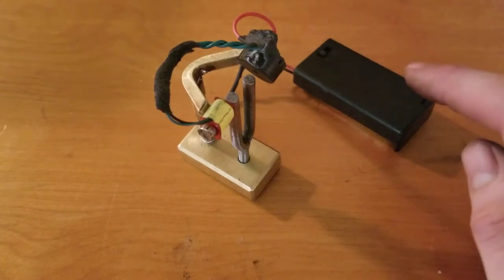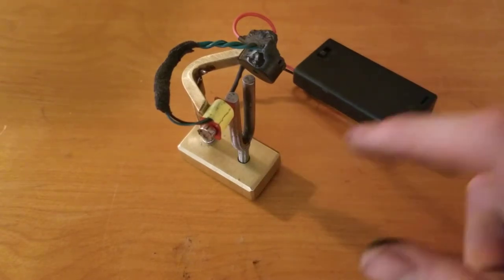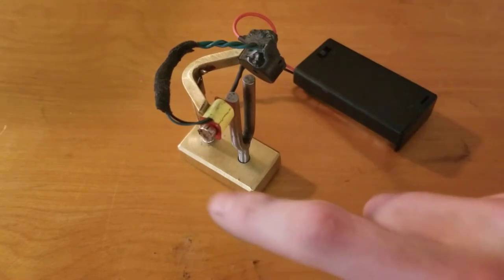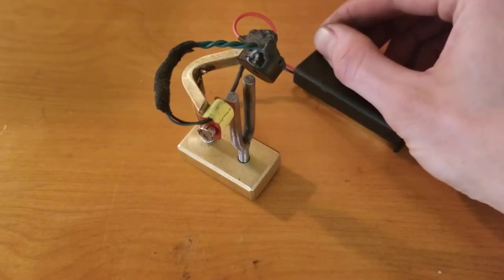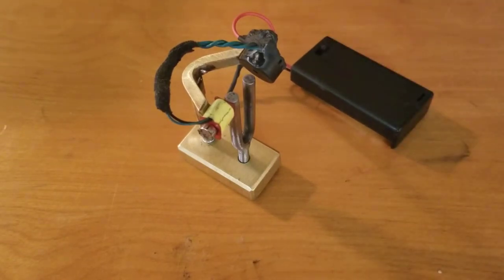So normally this circuit works with just a triple A. This block is the length of a triple A. This is a pair of double A's. At three volts, this circuit starts itself. So let's see how that works.